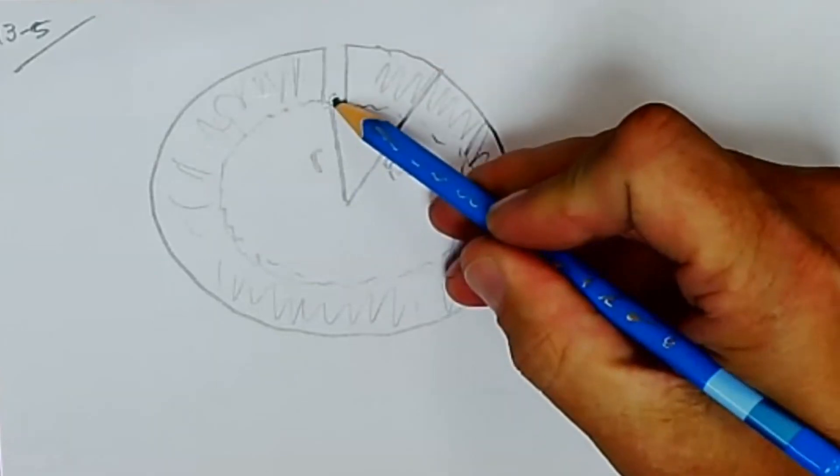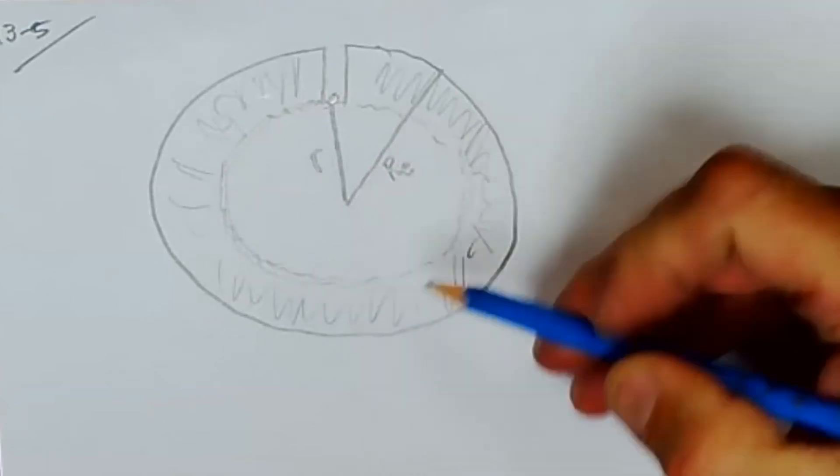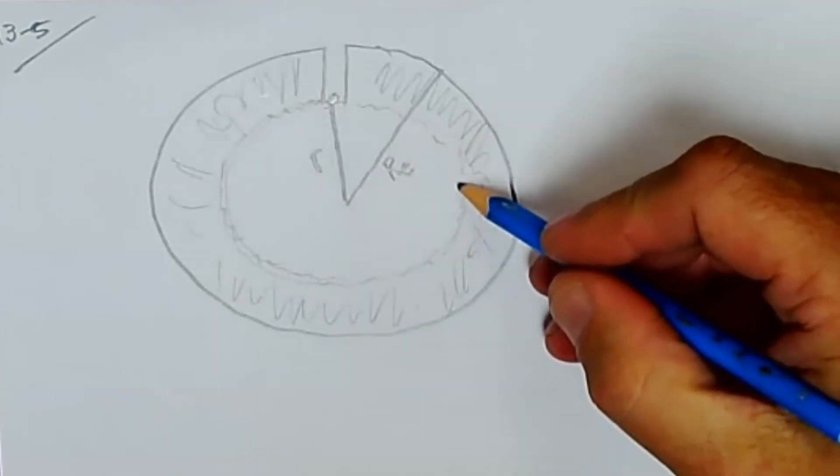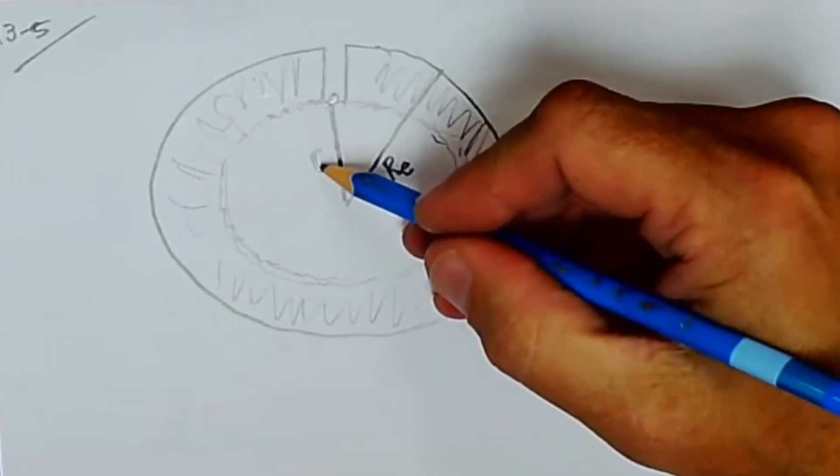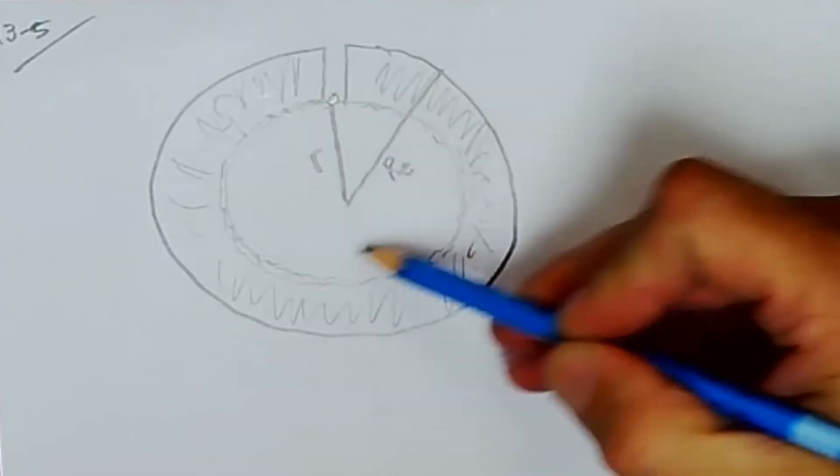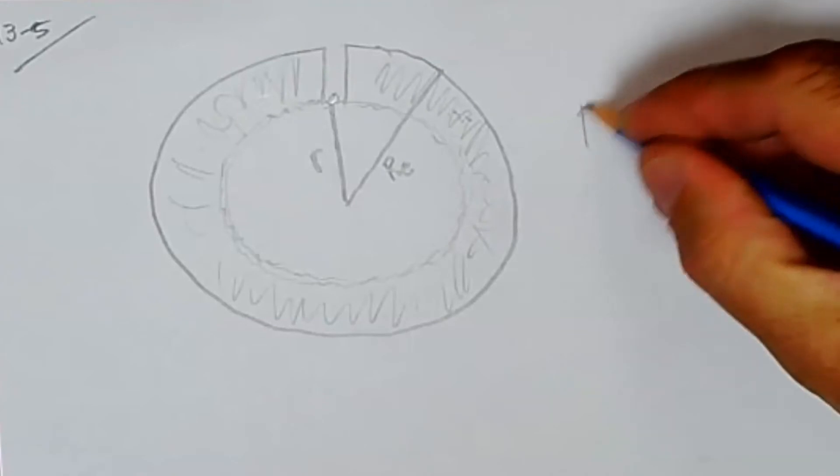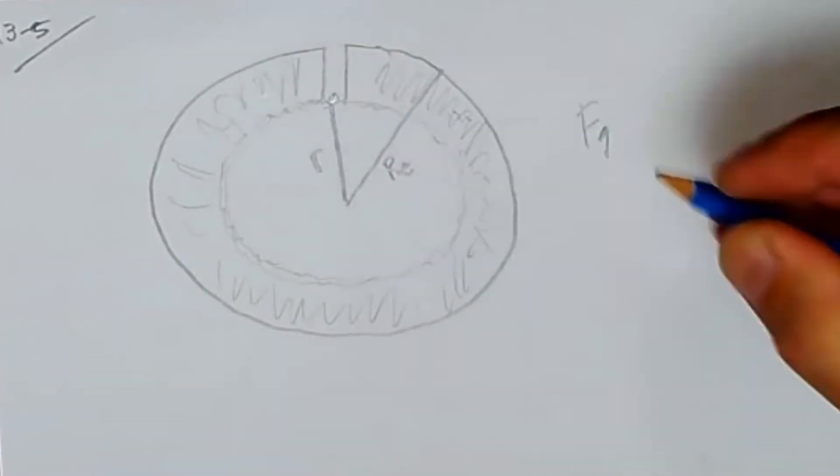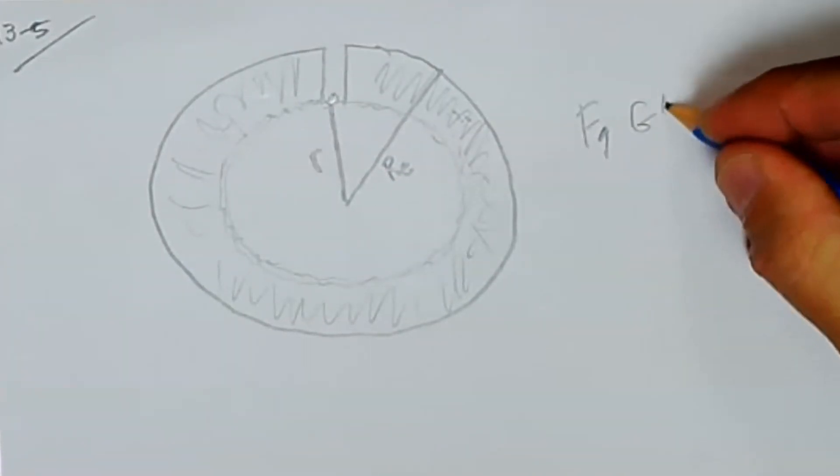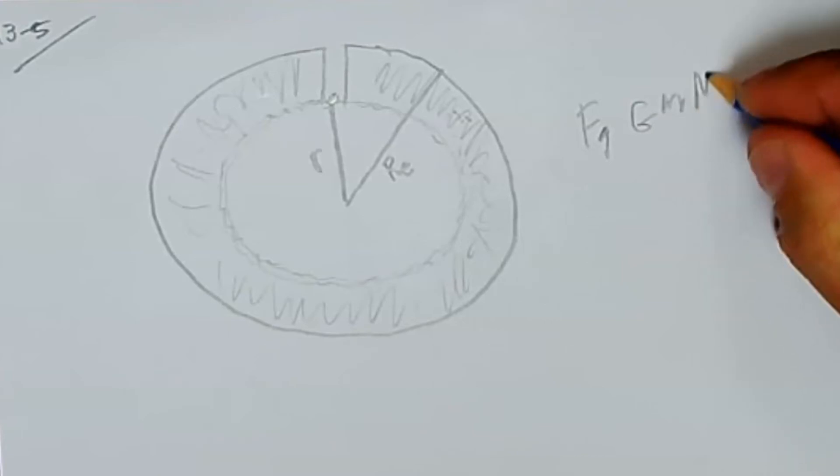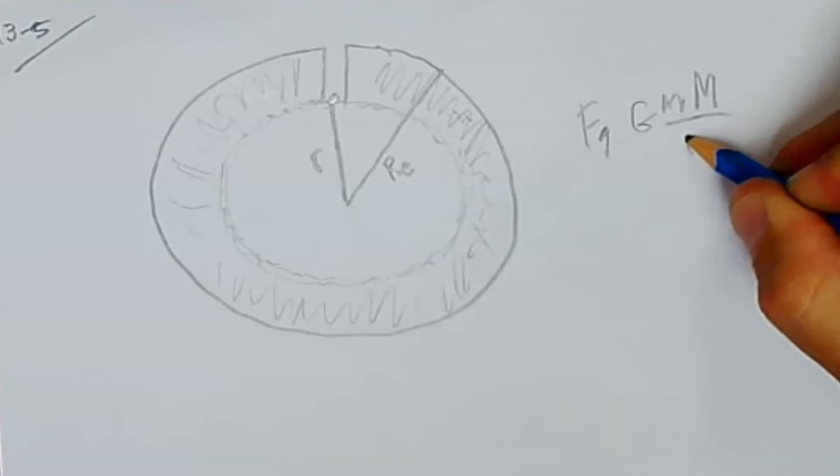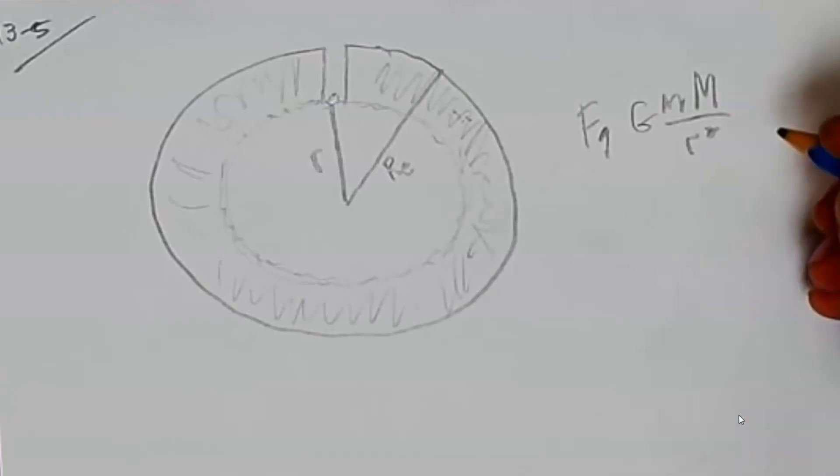And then you can treat it as if I'm standing on a planet, a new planet, that has this radius little r and mass of this amount. And then my force of gravity at that location would be G my mass times the mass of the inner sphere divided by little r squared.